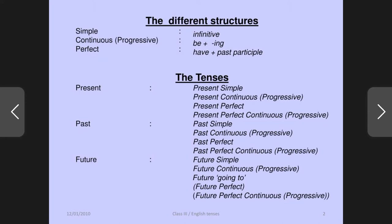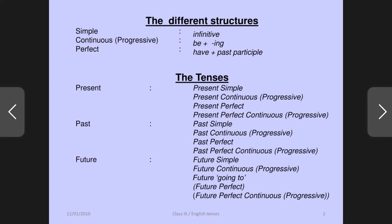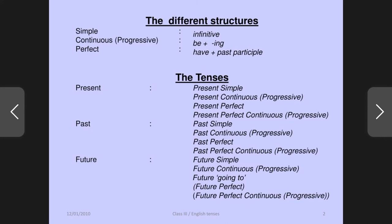So let's see the tenses. Present tense, past tense, and future tense. In this lesson I will teach you present, past, and future. Present tense has four sub-tenses: present simple, present progressive (means present continuous), present perfect, and present perfect continuous.